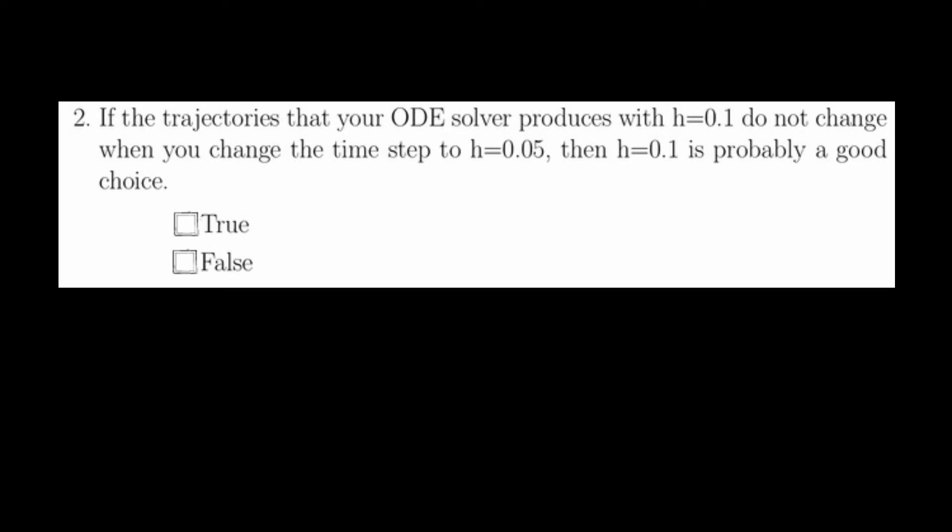Question 2 asks, if the trajectories that your ODE solver produces with h equals 0.1 do not change when you change the time step to h equals 0.05, then h equals 0.1 is probably a good choice. And this is true.